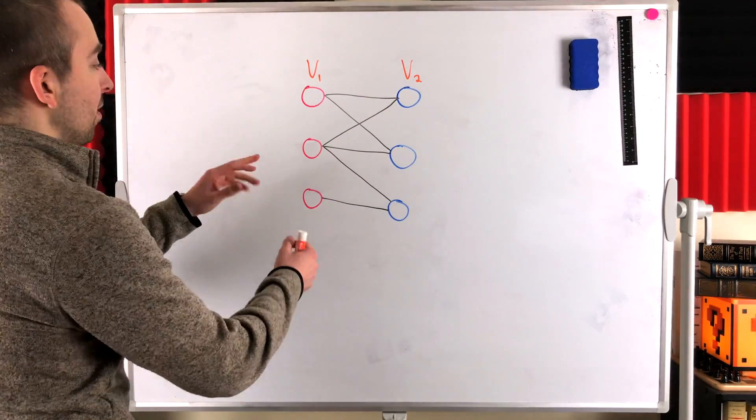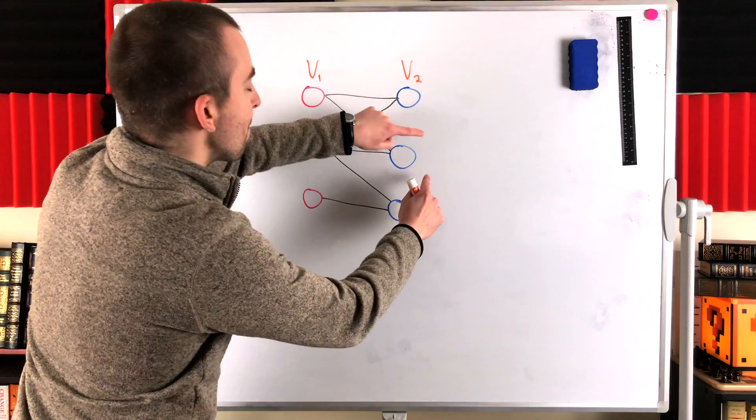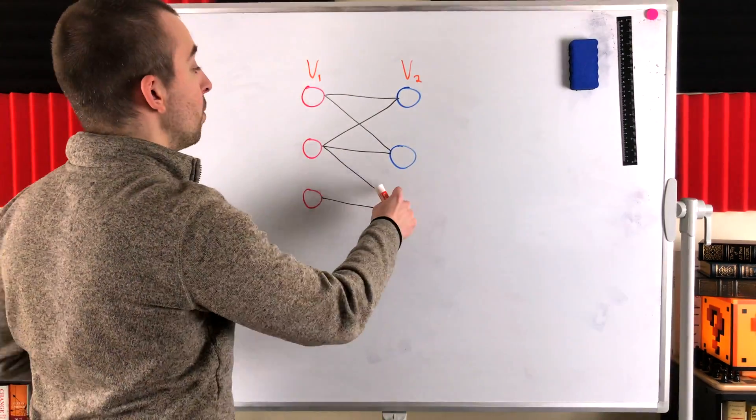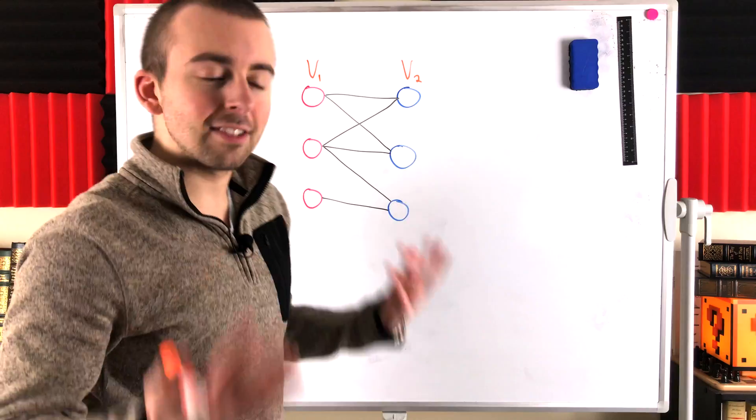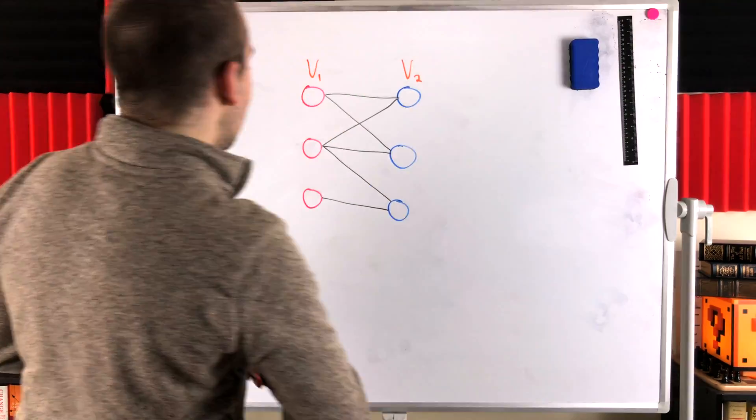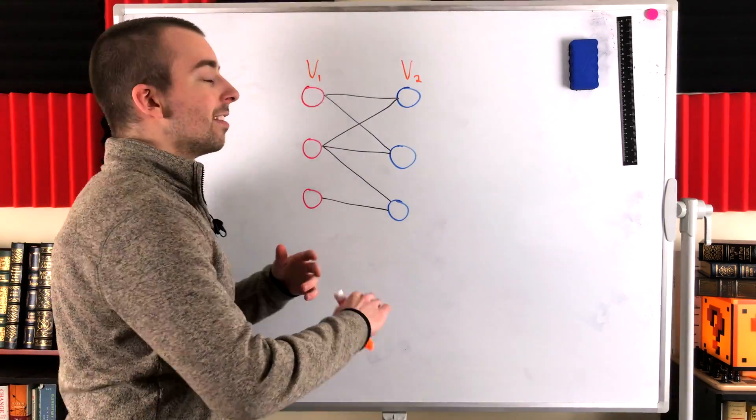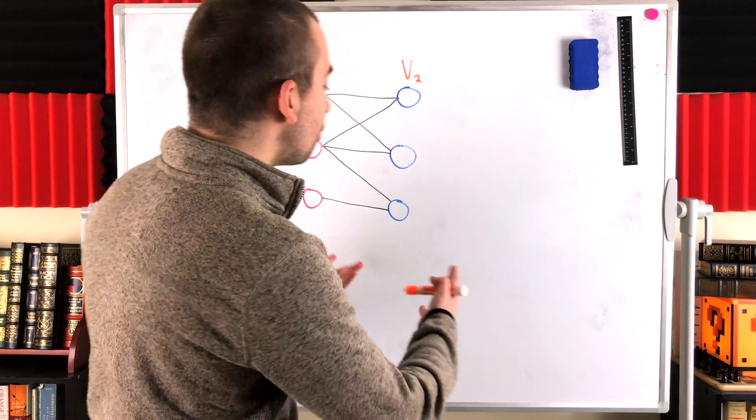Same thing with any vertices over here. This has neighbors over here, so we can't move it there if we want this to be a bipartite partitioning because then it would be adjacent to vertices in the same set as it. So if we've got a bipartite graph with vertices that all have neighbors, the partitioning is unique.